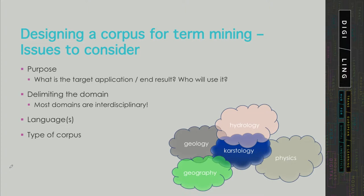Next is the issue of languages — how many languages you want to include. This is related to the purpose and also to text availability. If you include only one language, things are considerably simpler and your corpus will likely be monolingual, consisting of written texts, without having to deal with alignment. If you're aiming for a multilingual corpus, you should think about whether parallel texts are available, and if not, how you will ensure comparability.